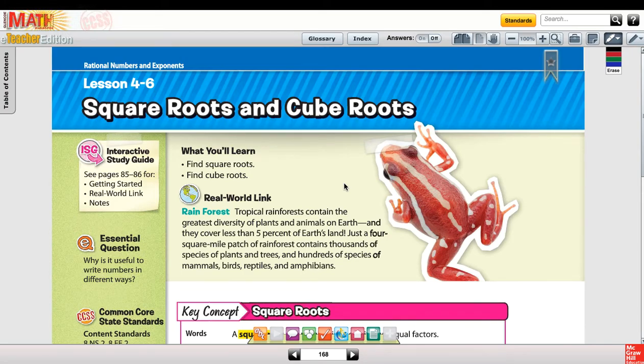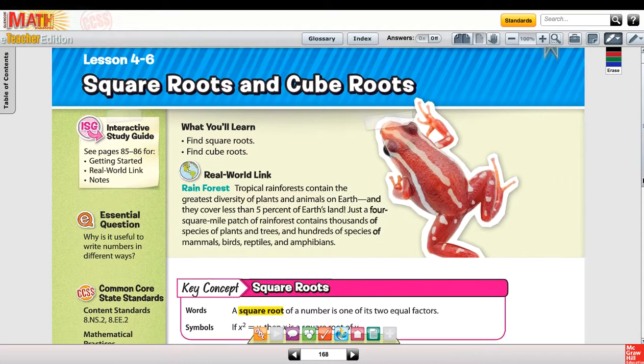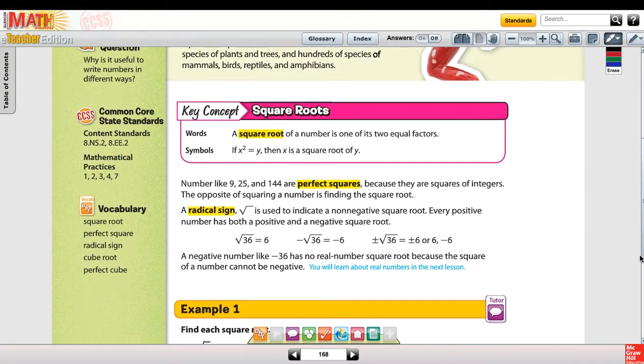In Chapter 4, we've been focusing on the essential question of why is it useful to write numbers in different ways. We've talked about scientific notation and exponents, and Lesson 4-6 talks about square roots and cube roots. We already have a little background knowledge on this because of our speed quizzes we've been doing last chapter. But this lesson will go pretty quick. There's just a few things we need to add to our notes about square roots and cube roots.